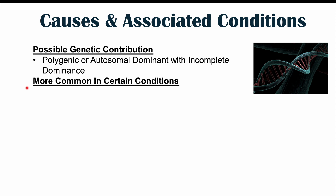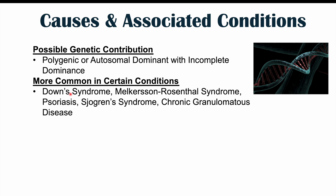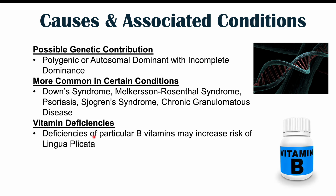This condition is also more common in certain medical conditions, including Down syndrome, Melkersson-Rosenthal syndrome, psoriasis, Sjögren's syndrome — which involves dry eyes and dry mouth — where the dry mouth may lead to cracking or deeper fissures in the tongue, and chronic granulomatous disease. There is also a potential role for vitamin deficiencies, particularly B vitamins, which can increase the risk of issues with the mouth, lips, and tongue.